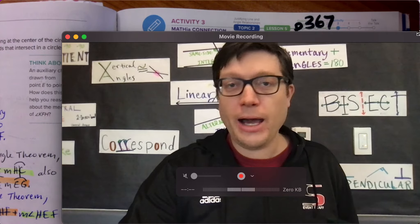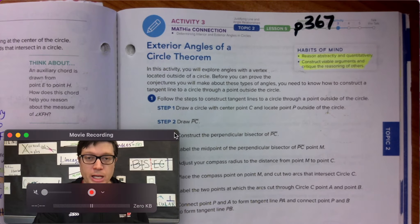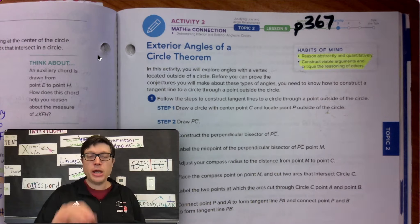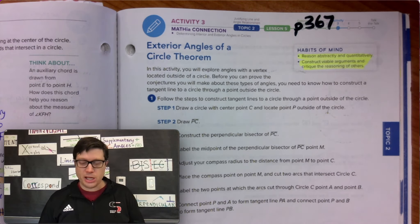Highlight, if you will, the habits of mind, good mathematicians and our progress for learning. It says we're going to reason abstractly and quantitatively, and we're going to construct viable arguments and critique the reasoning of others.